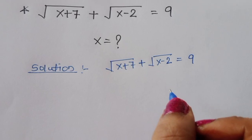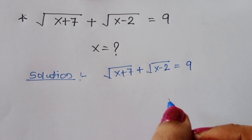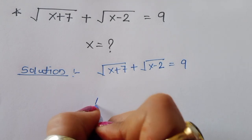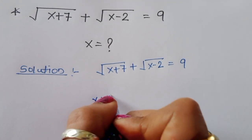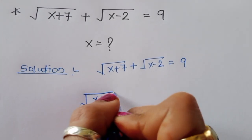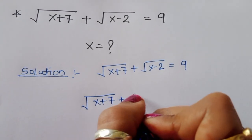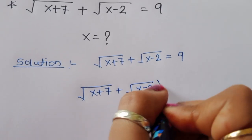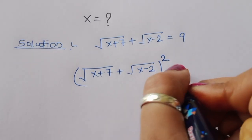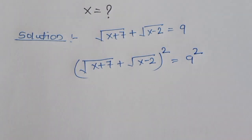We can do one thing here: we can take the square on both sides. So taking square on both sides, [√(x+7) + √(x-2)]² = 9².